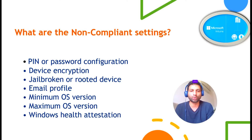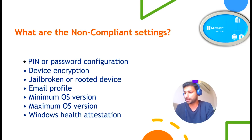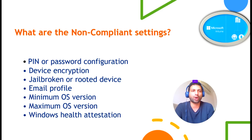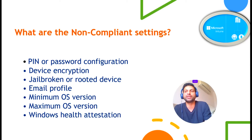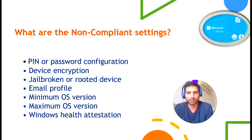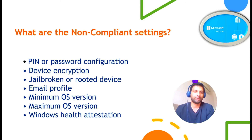The third setting is jailbroken or rooted devices — on iOS we say jailbroken, and on Android we say rooted. This means somebody has gotten admin rights over the operating system. The reason this is considered a security risk is because the device is no longer protected by the operating system's digital signing. As a result, the device could get malware or viruses. You can set this as a compliance requirement.